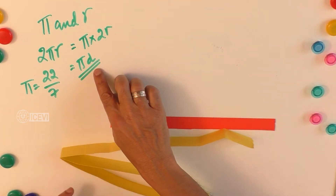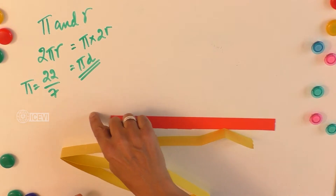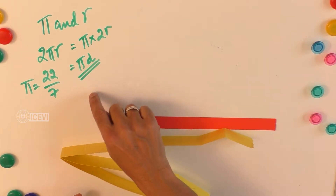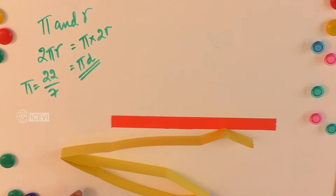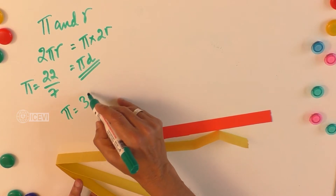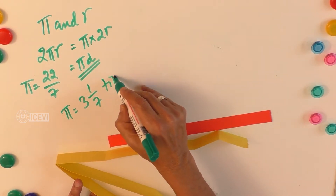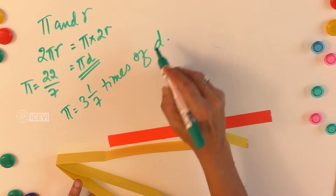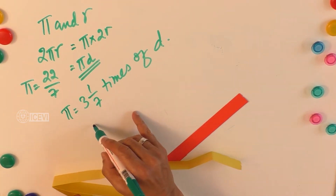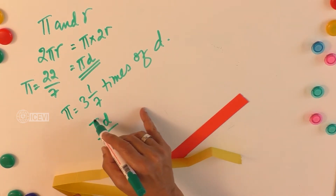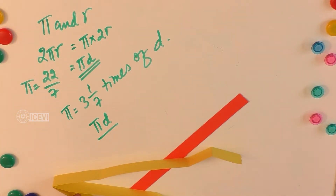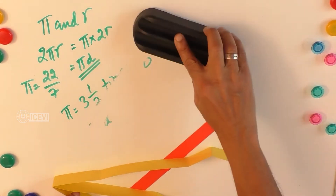That leftover portion is one-seventh of the diameter. So the diameter is linked to PI in such a way that PI is approximately 3 and 1/7 times the diameter. This means the circumference equals π times d, and π is 3 and 1/7 times the diameter. Let us prove this with another example.